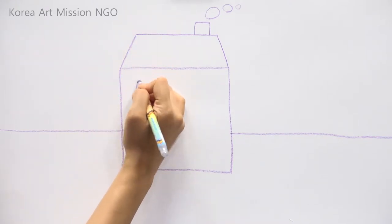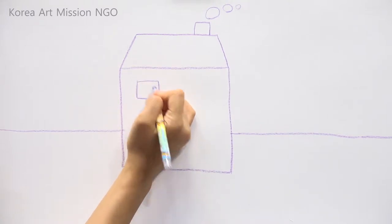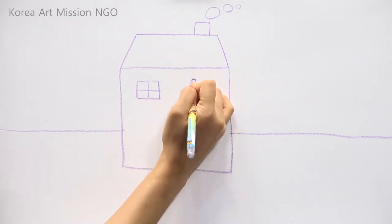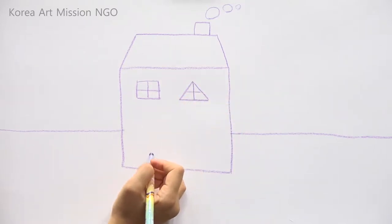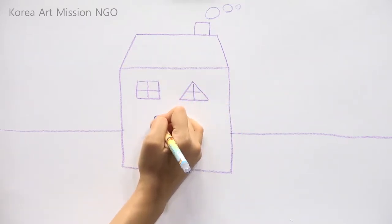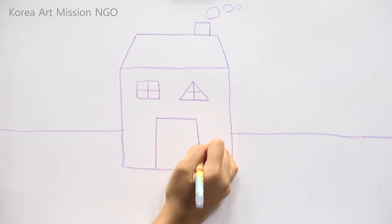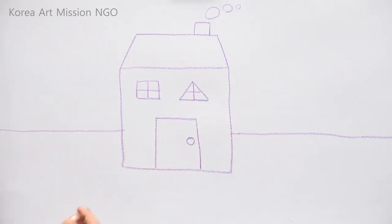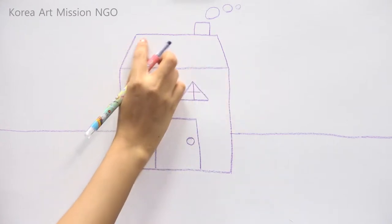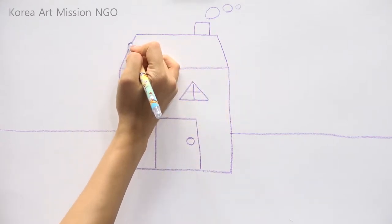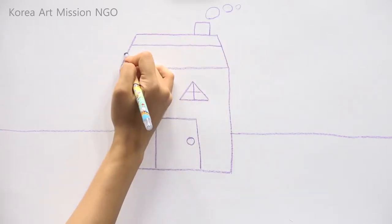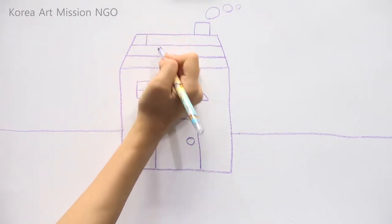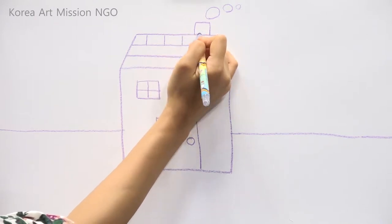Shall I draw windows next? I will draw a square window and then a triangle window next to it, like this. And next I will try to draw a rectangular door. I want you to try drawing a doorknob like this. And I will draw in some tiles on the roof — I'll draw lines on the roof from top to bottom. This is the first step.